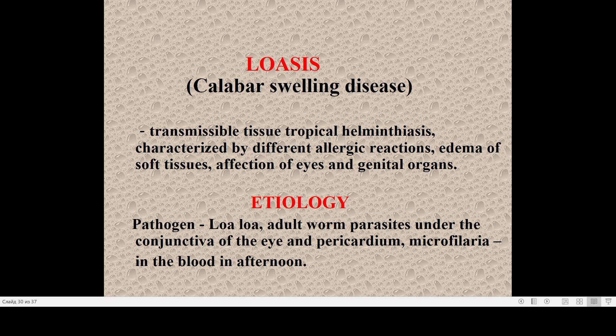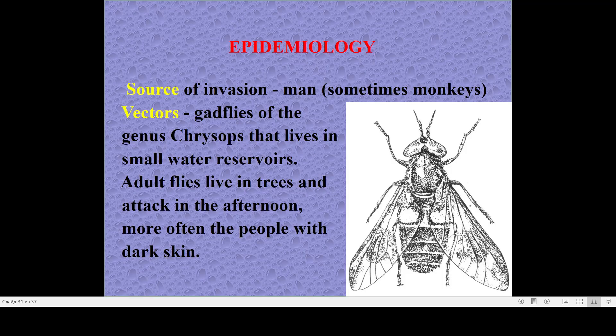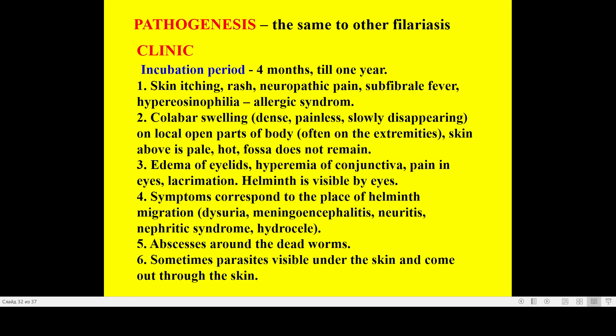Good news: due to the worm persisting under the conjunctiva rather than penetrating into the eyeball, problems with blindness are resolved more simply. The source of infection is human, sometimes monkey. The vector is the insect Chrysops — a deerfly from genus Chrysops that lives in small water reservoirs and small water lakes. Adult flies live in trees and attack more often in the afternoon, attacking people with dark skin.